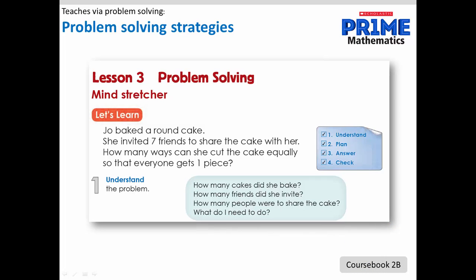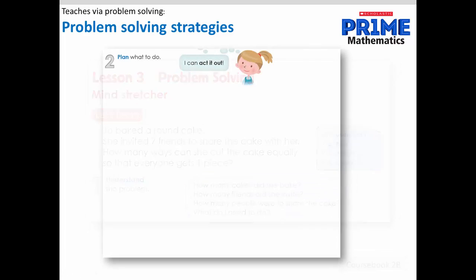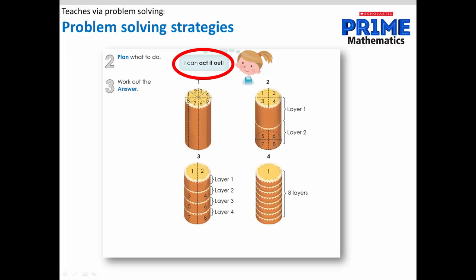This mind stretcher is an example of a non-routine problem or a problem that uses higher order thinking skills. This problem has multiple answers. In this case, the heuristic acted out is planned as the way to solve the problem. And having workshopped this problem with several groups of teachers, this is exactly the strategy many of them use. They start cutting imaginary cakes with their hands. Step 3 shows the way the problem can be solved pictorially. And Step 4 validates the answer.